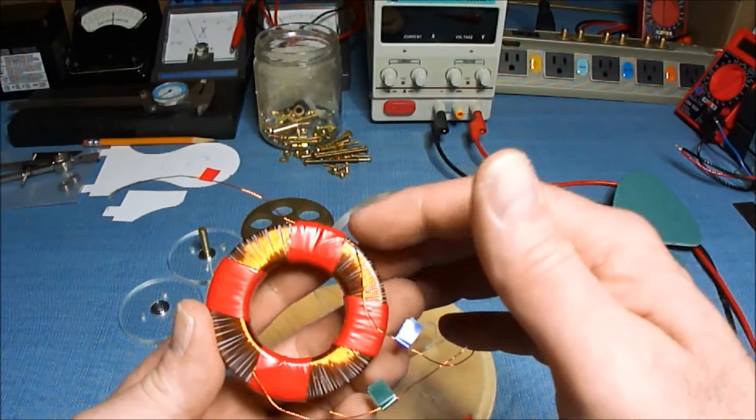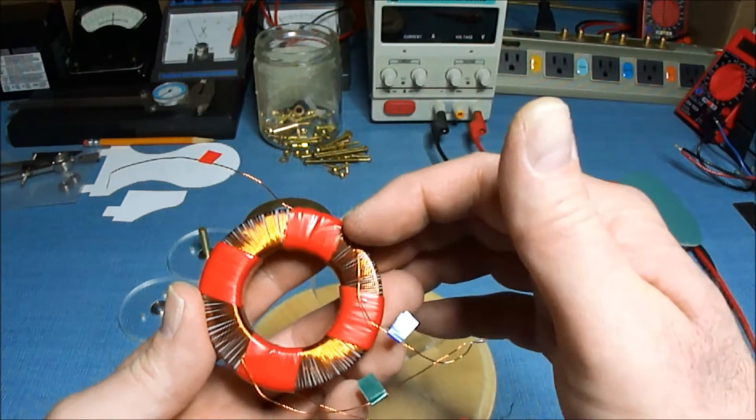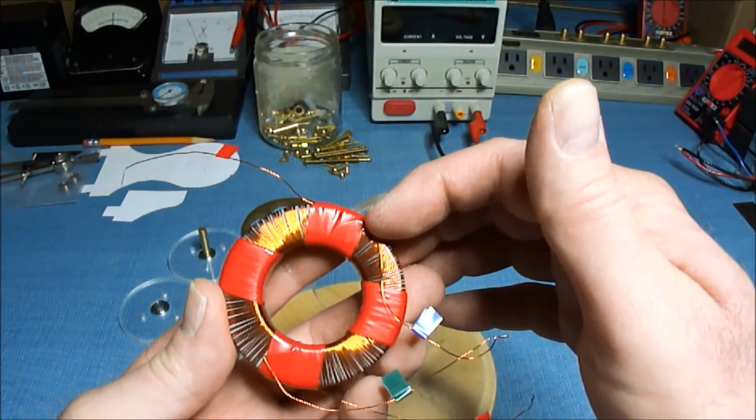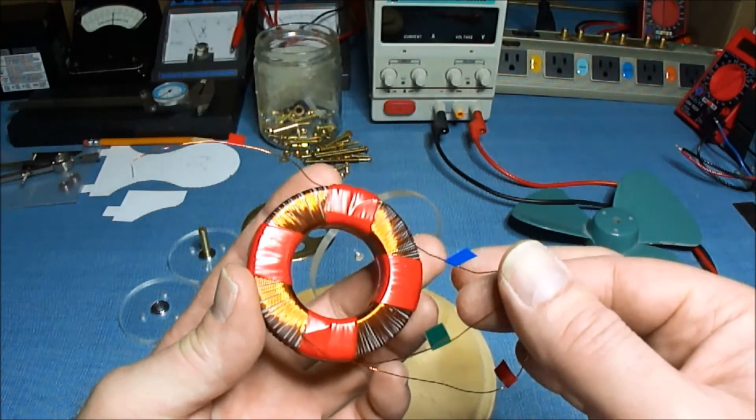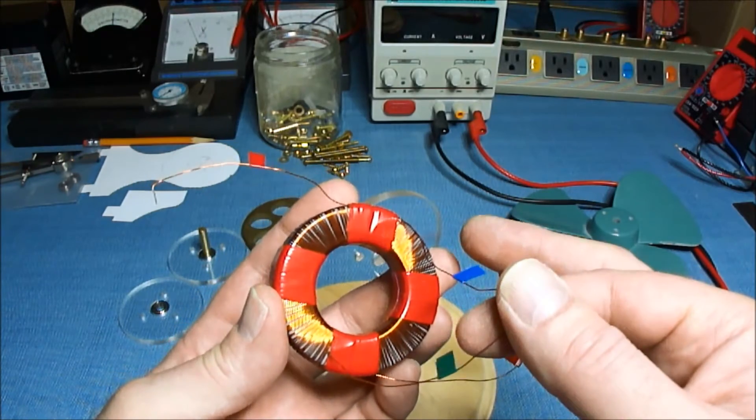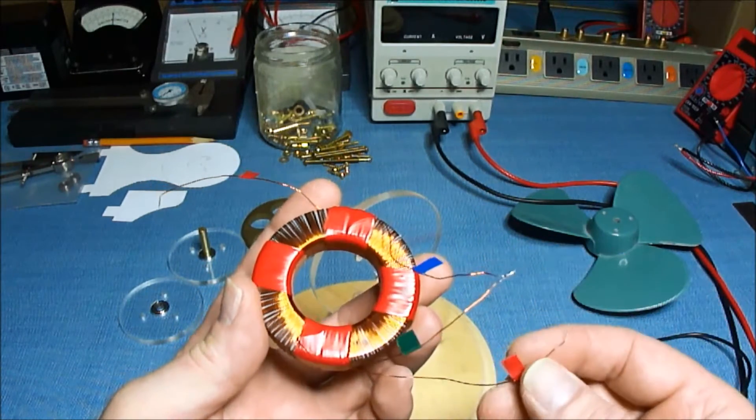And then I took the beginning of this wire and connected it to the end of the other coil. Kind of a two separate coil, bifilar type of winding.